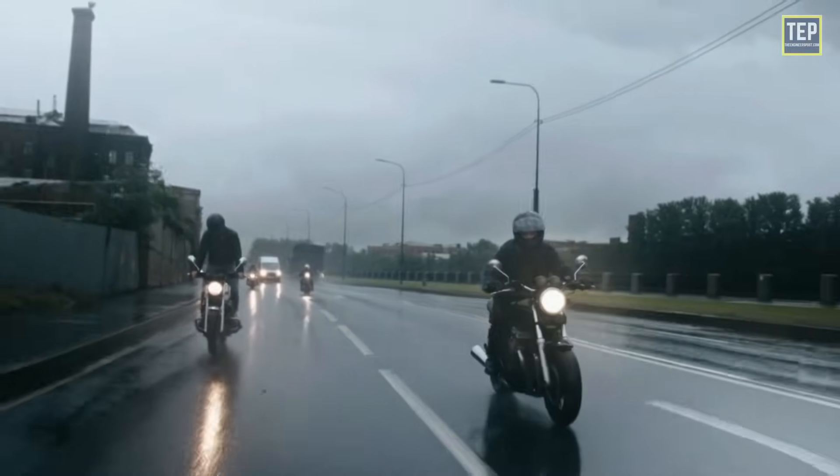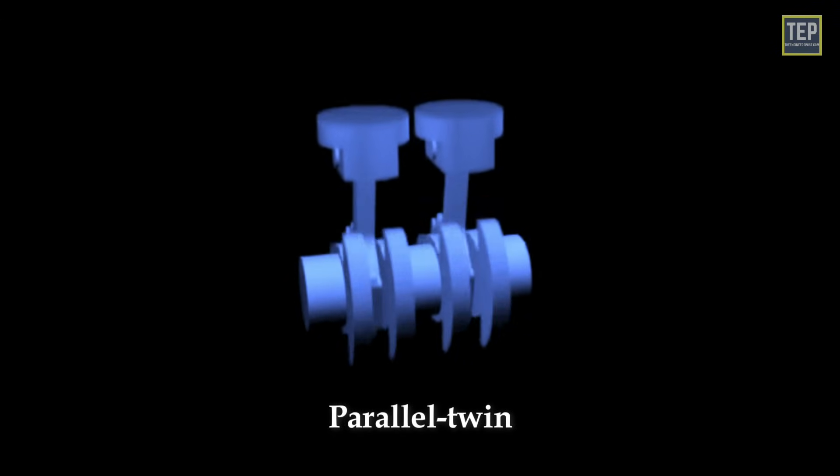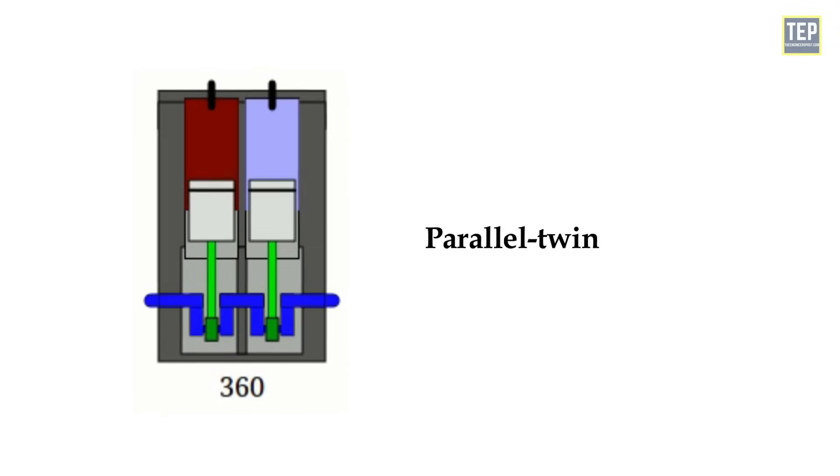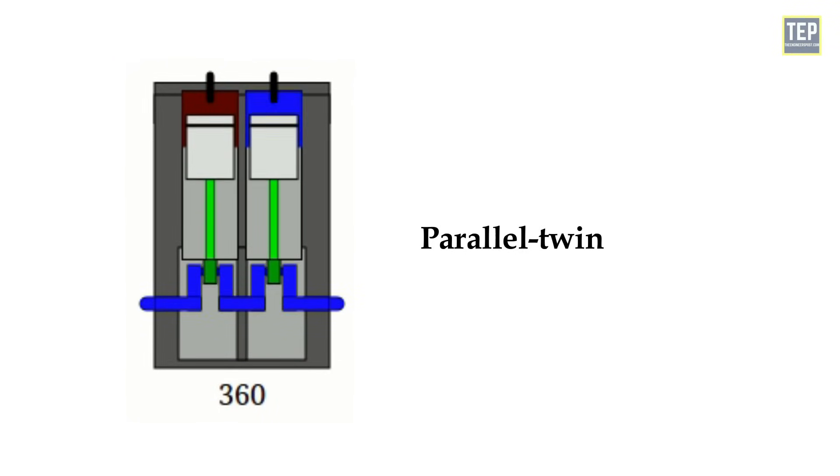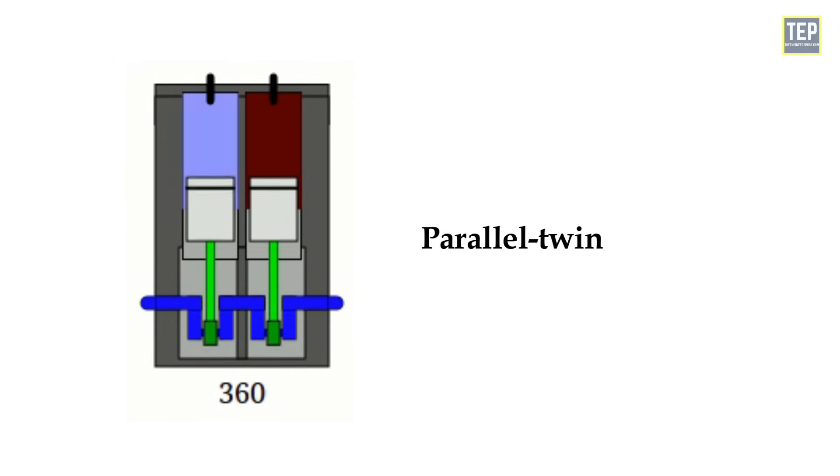In the United Kingdom, the term parallel twin is traditionally used for engines with a crankshaft angle of 360 degrees, since the two pistons are in the same direction, that is parallel to each other.